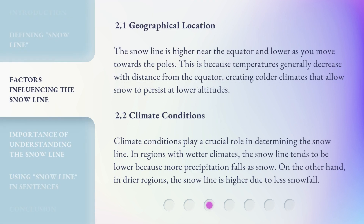Geographical Location: The snowline is higher near the equator and lower as you move towards the poles. This is because temperatures generally decrease with distance from the equator, creating colder climates that allow snow to persist at lower altitudes.